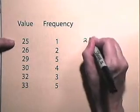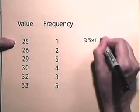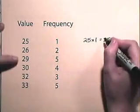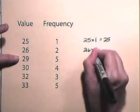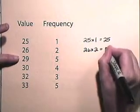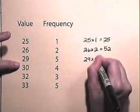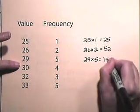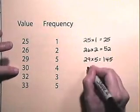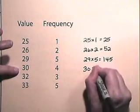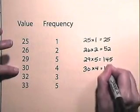we multiply 25 times 1, because it appears once, to get 25. We multiply 26 times 2 to get 52, we multiply 29 times 5 to get 145, we multiply 30 times 4 to get 120,